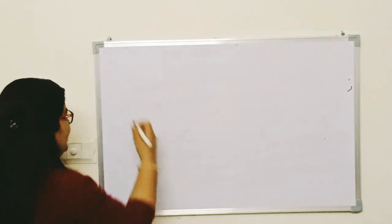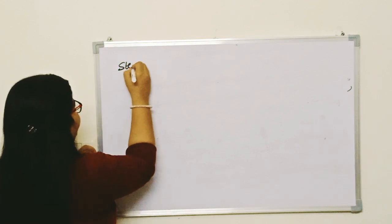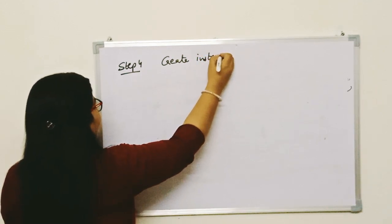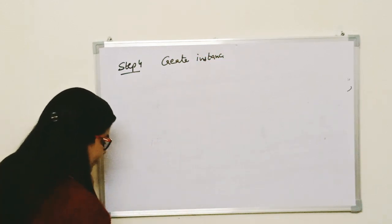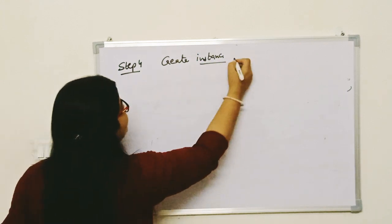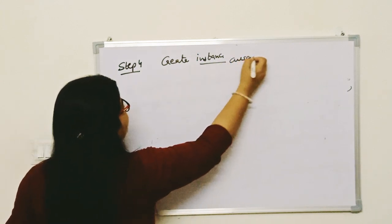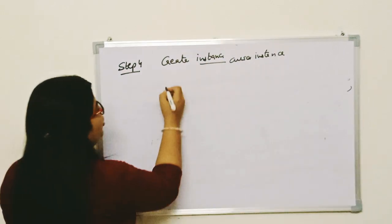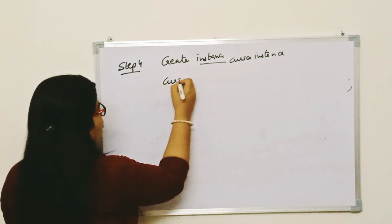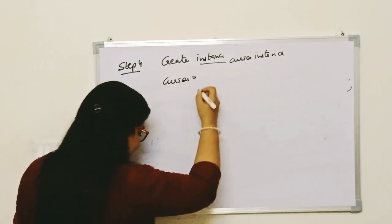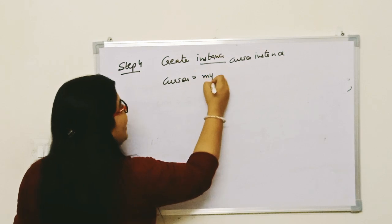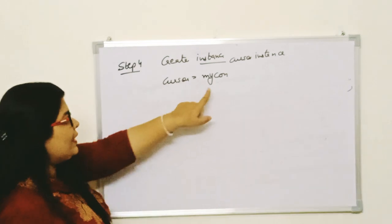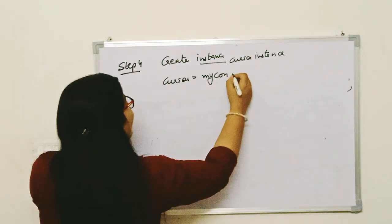The fourth step is: you have to create an instance — that is a cursor instance. How you can do that — you write: cursor = mycon.cursor(). In the second step we had created the connection object mycon, so now we write mycon.cursor().